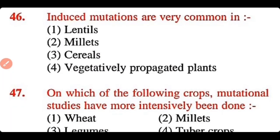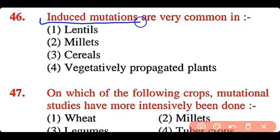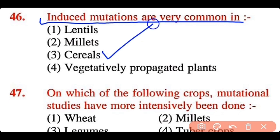Question 46: Induced mutations are very common in: lentil cells or millets, cereals, or vegetatively propagated plants. The correct answer is option 3. Induced mutations are most common in cereals.